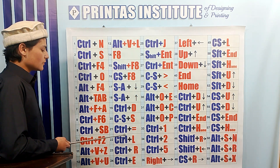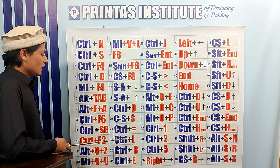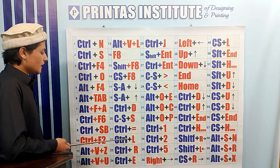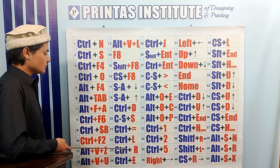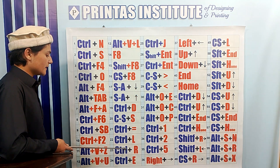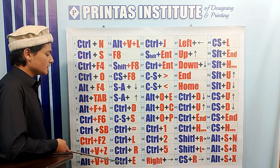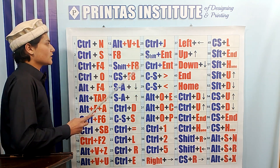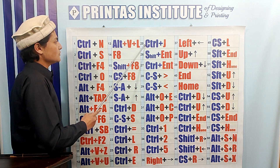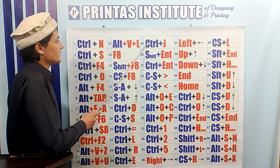Ctrl Equal is used to subscript the font. Ctrl L is used to left align the text. Ctrl R is used to right align the text. Ctrl E is used to center align the text. Ctrl J is used to justify the text.